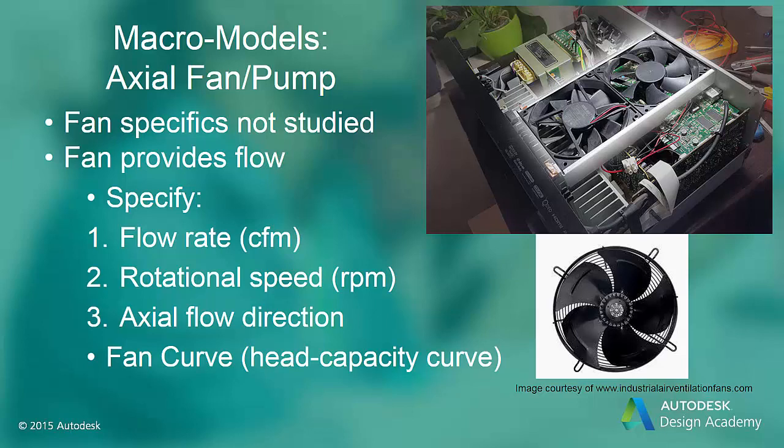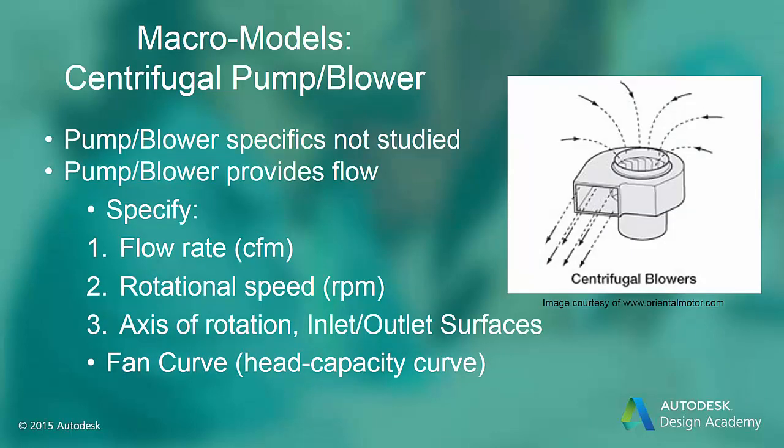Like the axial fan or pump, centrifugal pumps and blowers are not the parts being studied — they are just used to provide fluid flow in the model. Including the actual pump or blower geometry not only adds nodes but also forces the simulation to be transient since the blades rotate. For the blower material type, the data required is the flow rate, rotational speed, axis of rotation, and the inlet and outlet surfaces of the blower or pump. As with axial fans and pumps, you can specify the head capacity curve instead of a constant flow rate, and you can also control the blower with a thermostat if needed.